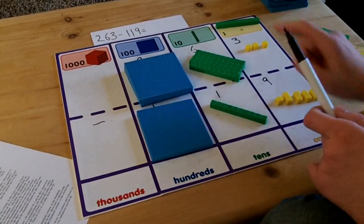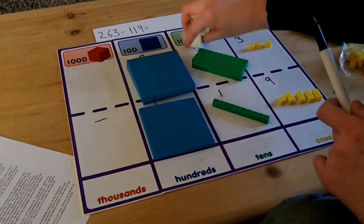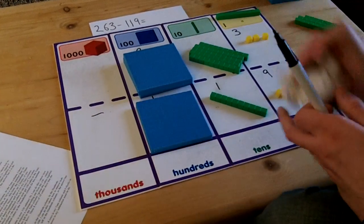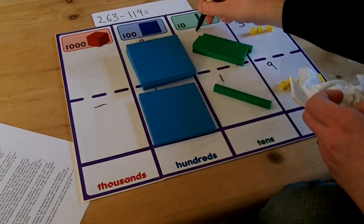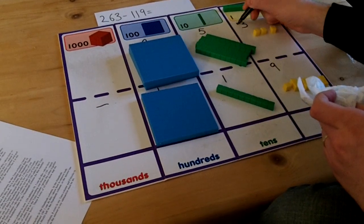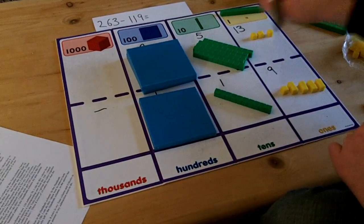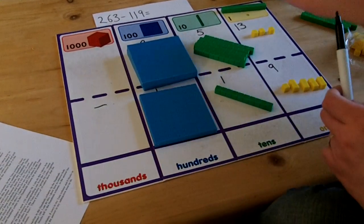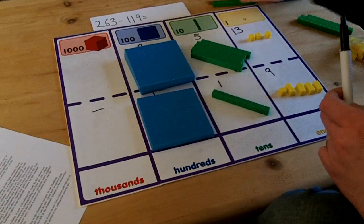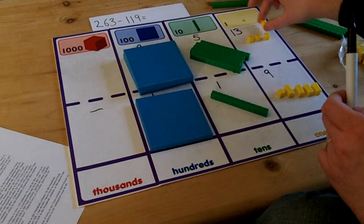Because I've transferred across the columns, this means I've now got 50 in the tens and 13 in the ones. Now that I've got the correct numbers written down, I can exchange this block of ten for ten single cubes.